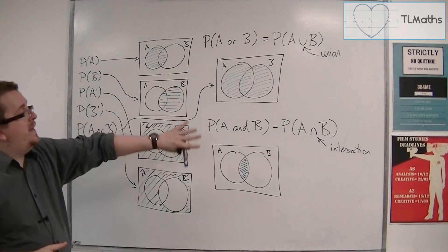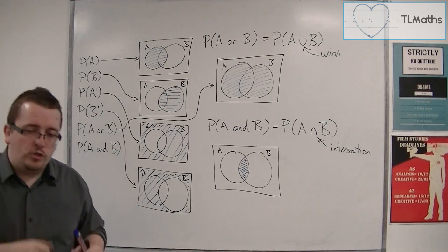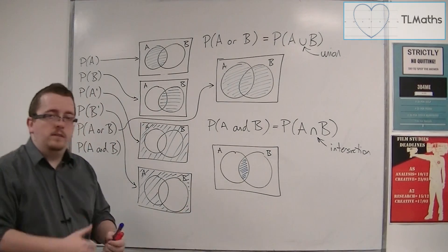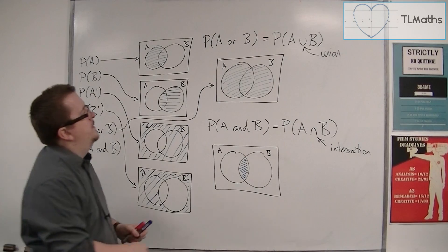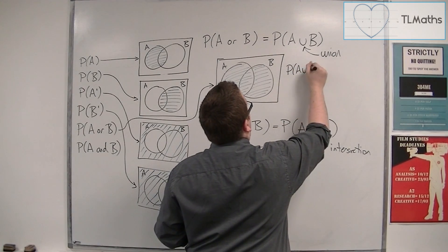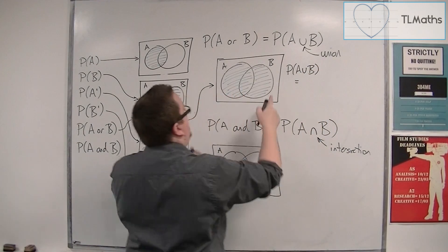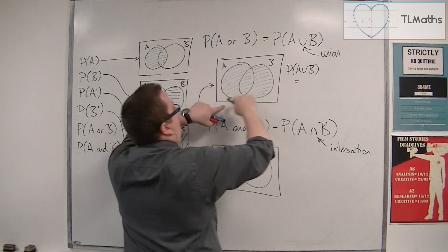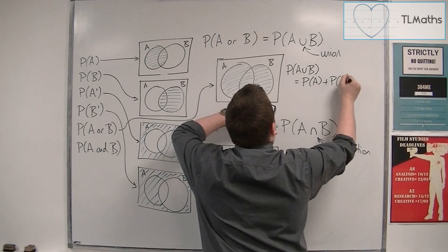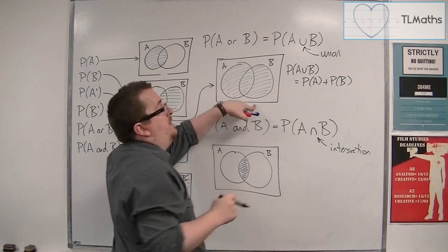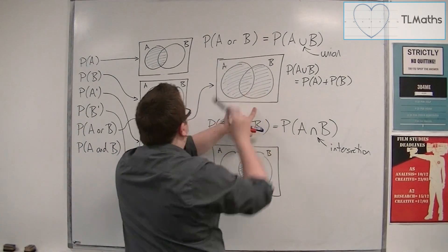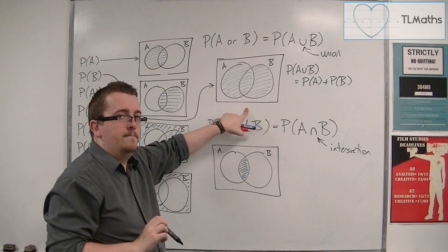Now, because we have these two new forms of notation, we can introduce a new bit of a formula. Because we can now say that the probability of A union B is equal to, well, we've got all of A there, so the probability of A. We've got all of B there, but the problem with just adding probability of A and probability of B is that we've counted this intersection part twice.